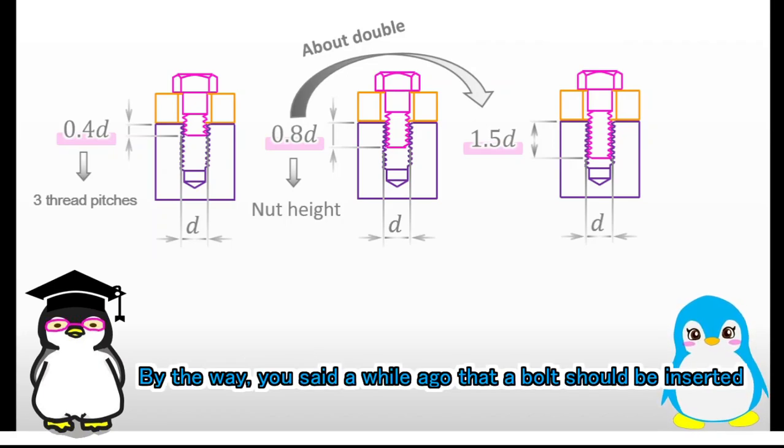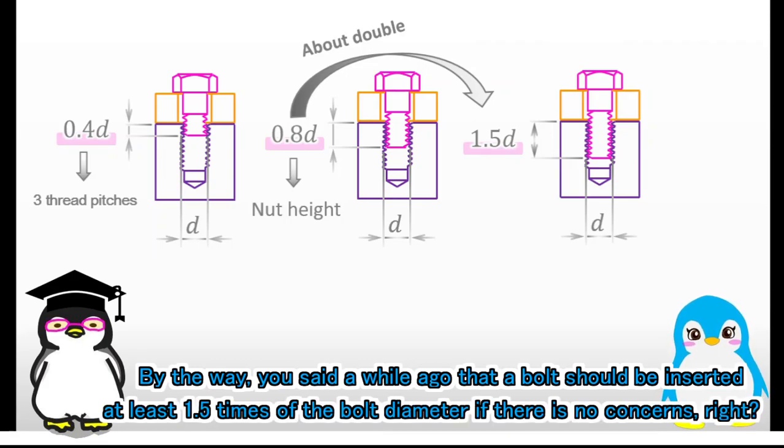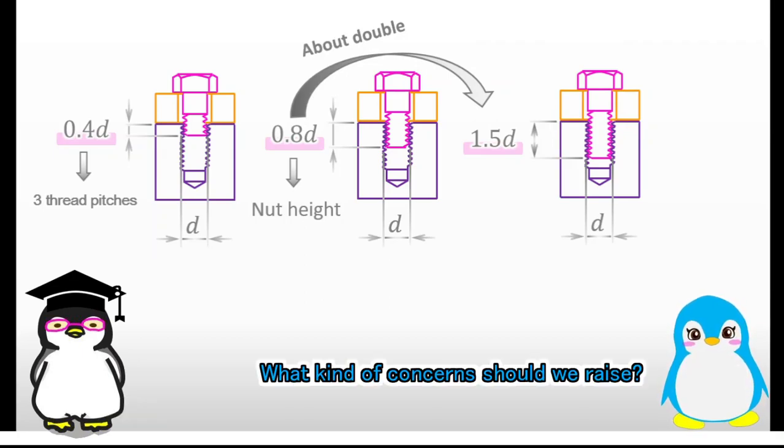I see. We should insert a bolt at least double length of the nut. I thought that 1.5 theory is just a rule of thumb. Now I know that the theory has a reason. By the way, you said a while ago that a bolt should be inserted at least 1.5 times of the bolt diameter if there is no concerns, right? What kind of concerns should we raise?